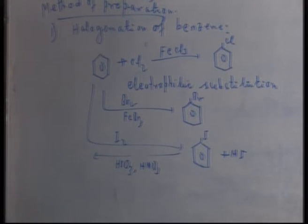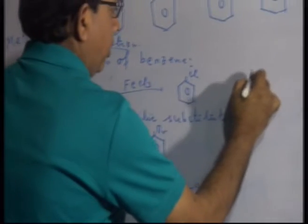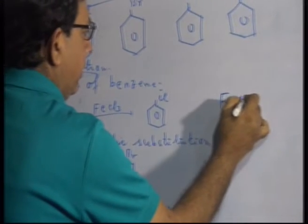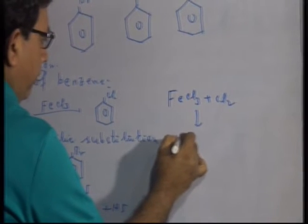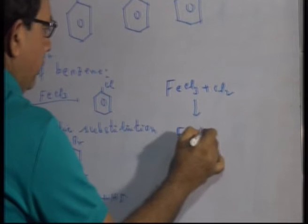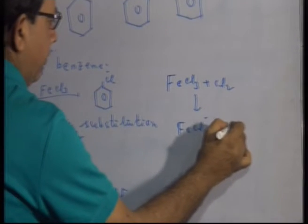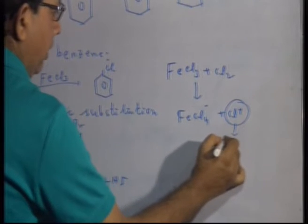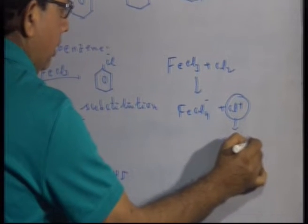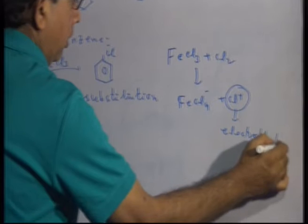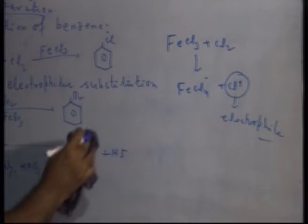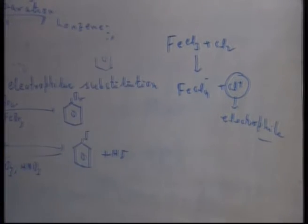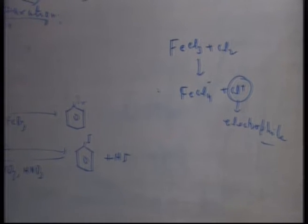What is the mechanism of this reaction? FeCl3 is a Lewis acid — it reacts with chlorine to form FeCl4⁻ and Cl⁺. This Cl⁺ is an electrophile that attacks the benzene ring, which is why this is called an electrophilic substitution reaction.